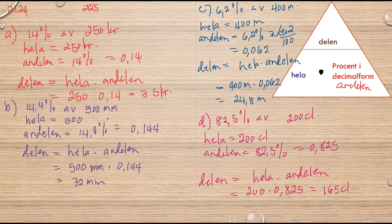Nu ska vi titta på andra metoden, metod 2. Så jag börjar med A. Fortfarande 14% av 250 kronor.